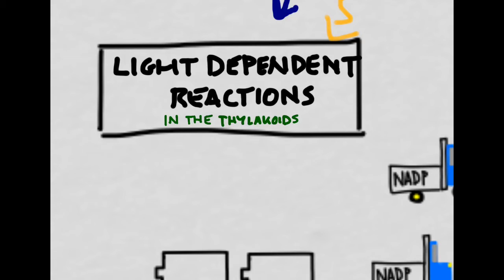The light-dependent reactions happen in the thylakoids. However, the light-independent reactions are going to happen in the stroma.